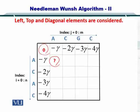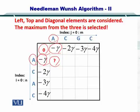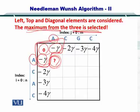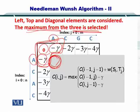So if you have 0, minus gamma, minus gamma and if you know A and A would match, then you need to compute the maximum from these three conditions. So the maximum value from these will be considered towards calculating this value.